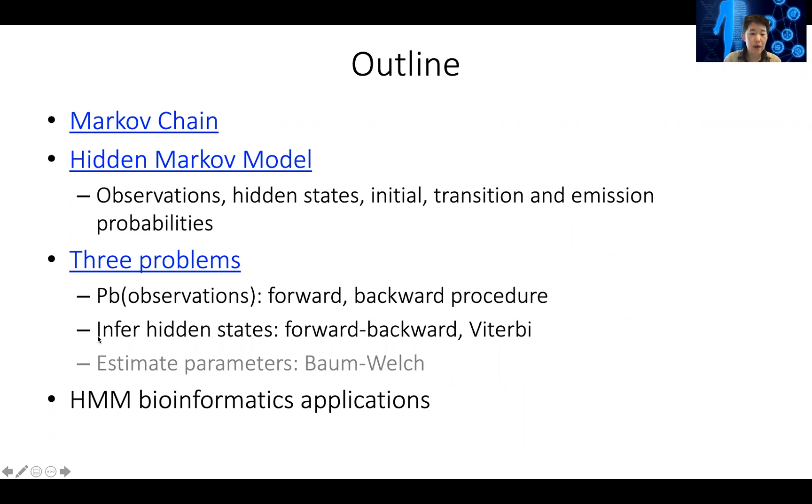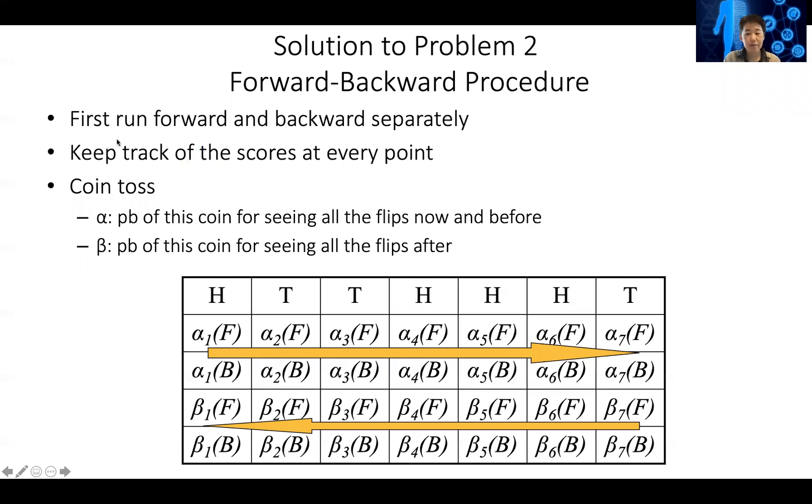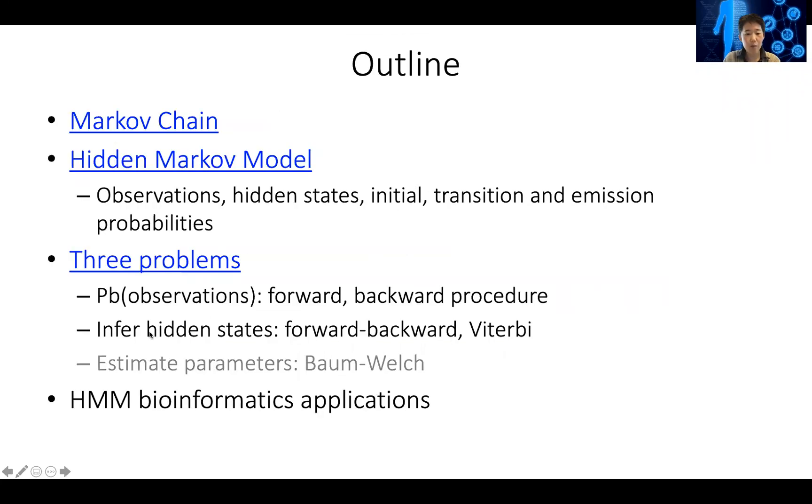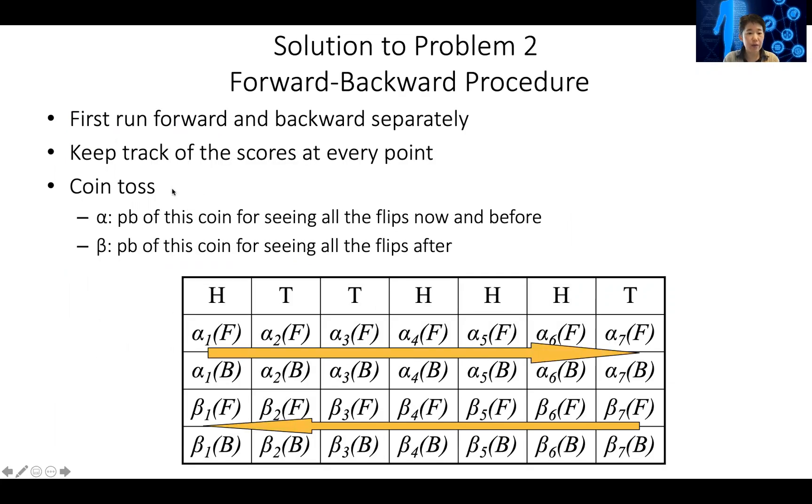The second problem is to infer the hidden states. If I have a particular observation, a string of coin flips in this case, I would like to ask, if I don't know the hidden coins, can I guess what that hidden coin is? So if I have a string of coin flips like this, HTTHHT, I would ask what is the probability the first coin is fair coin, second coin is fair coin, and so on.